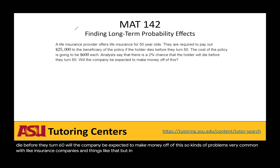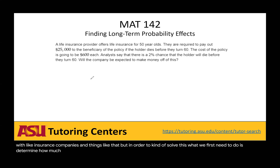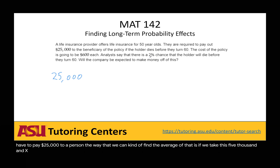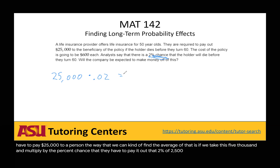In order to solve this, what we first need to do is determine how much, on average, the insurance provider is paying out. If there is a 2% chance that they have to pay $25,000 to a person, the way we can find the average is to take $25,000 and multiply by the percent chance that they have to pay it out. 2% of $25,000 is $500.